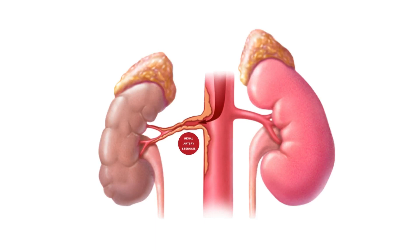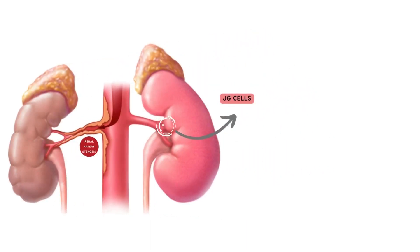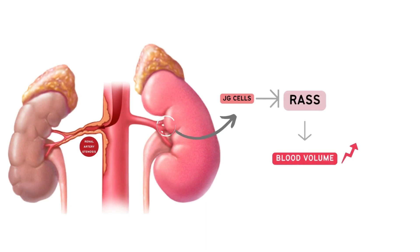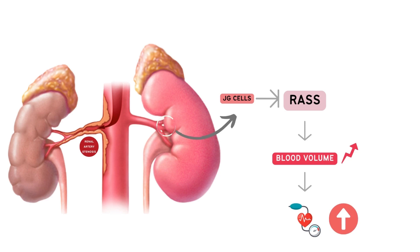For instance, renal artery stenosis reduces the amount of blood that reaches one or both kidneys. Juxtaglomerular cells will, as a result, detect a drop in blood volume, activating the RAS. Due to inadequate renal perfusion, this may result in an improper rise of the circulating blood volume and arterial tone, which leads to abnormally high blood pressure.